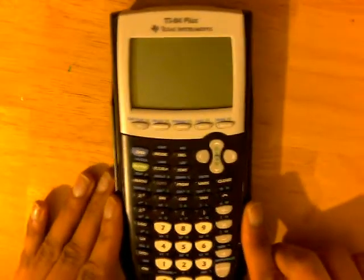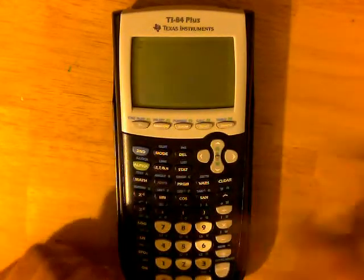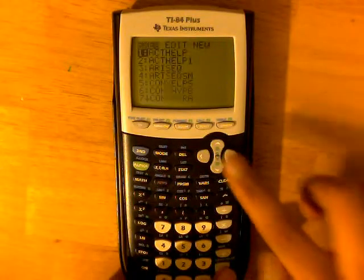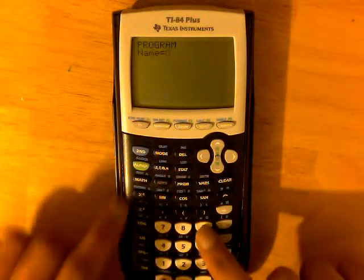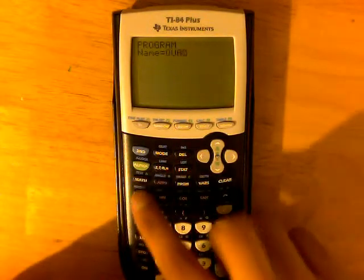So first, let's turn our calculator on, and then click Program. Slide all the way over to New, and click Create New. And we're just going to call it Quad, so Q-U-A-D.